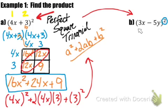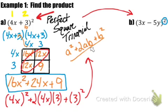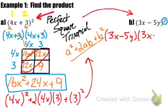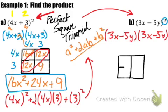Looking at example b on the right, we have the same situation — a binomial being squared. This will take the form a squared plus 2ab plus b squared. Don't worry about that minus sign, because when you identify your a and b terms, b is just a negative 5y. We're going to expand it to show how it works: we have 3x minus 5y times 3x minus 5y, and we'll multiply out using our Punnett square.